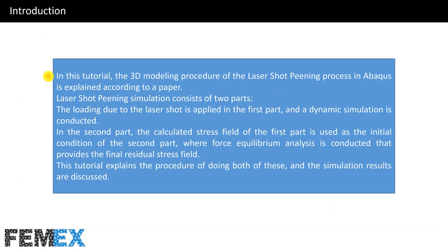In this tutorial, the 3D modeling procedure of the laser shot peening process in Abaqus is explained according to a paper. Laser shot peening simulation consists of two parts. The loading due to the laser shot is applied in the first part and a dynamic simulation is conducted. In the second part, the calculated stress field of the first part is used as the initial condition, where force equilibrium analysis is conducted to provide the final residual stress field.